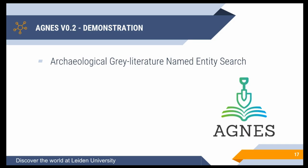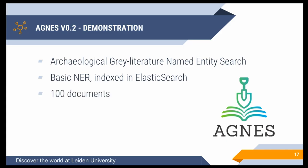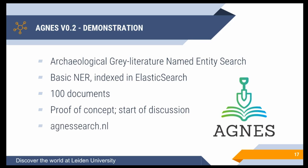To give you an idea of what the system looks like, I've built a front-end: version 0.2 of AGNES — Archaeological Grey Literature Named Entity Search. For this version I've used the named entity recognition described and indexed it in Elasticsearch, an off-the-shelf search engine, across 100 randomly selected documents. This is a proof of concept and a starting point for discussion with archaeologists — it's easier to show them something they can critique than to simply ask what they want, as that tends to be less productive. The link is agnesearch.nl if anyone wants to look.